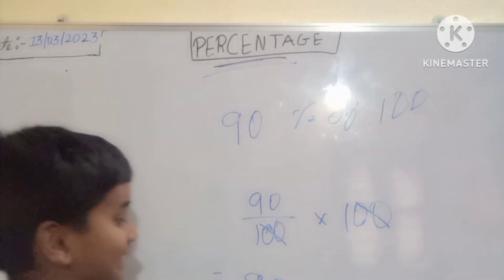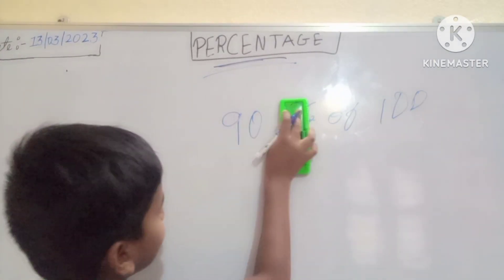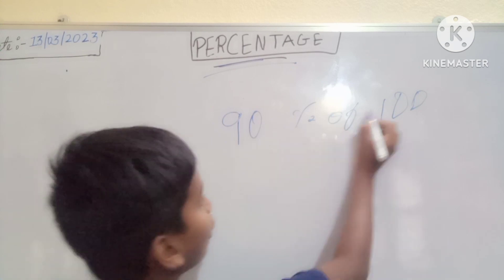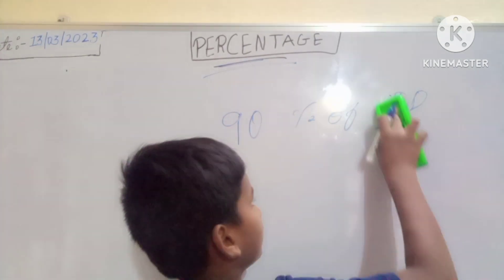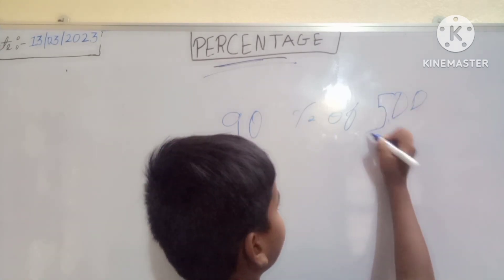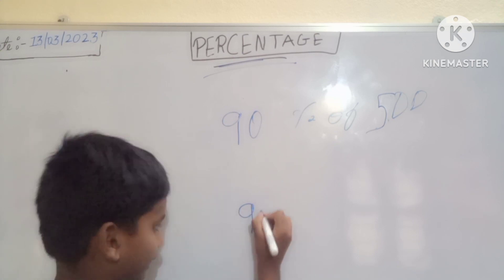But in some questions you will get that 90 percent of 500. What you will do now? Same trick, same solution. Means 90 by 100.